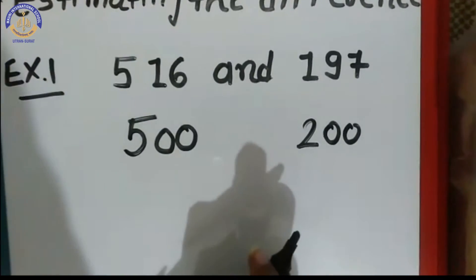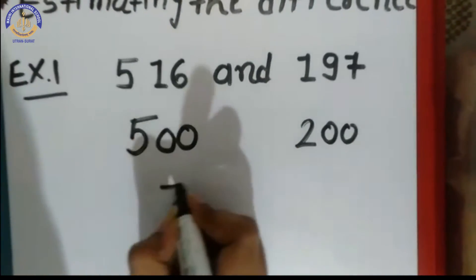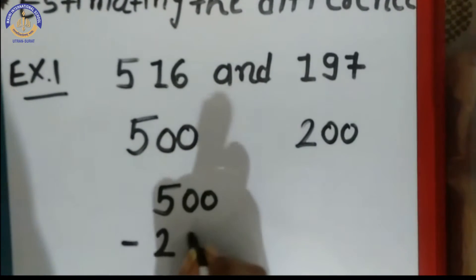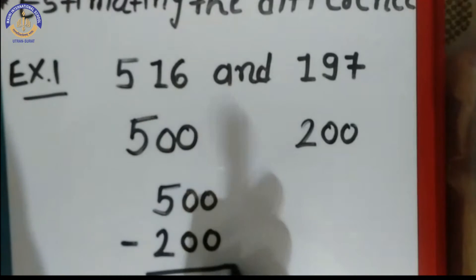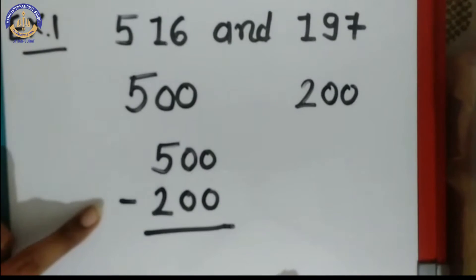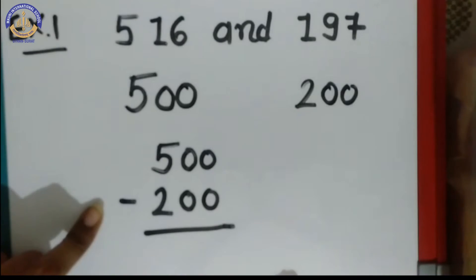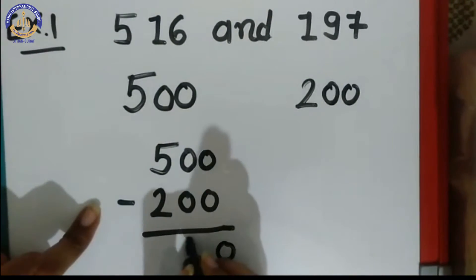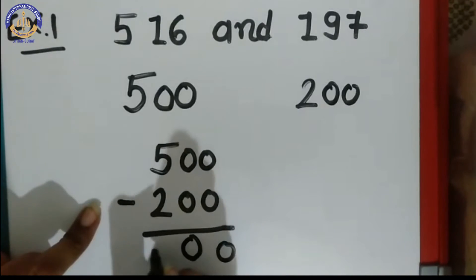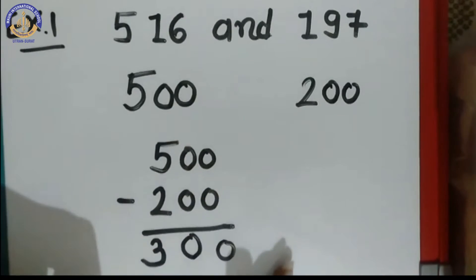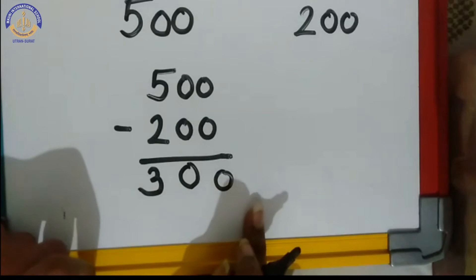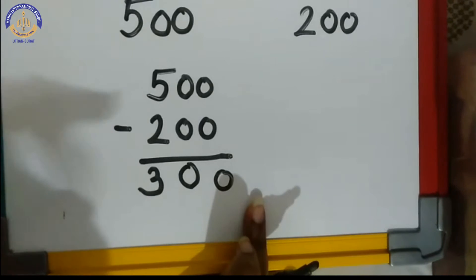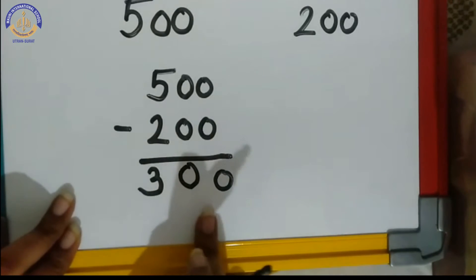Now we find the estimated difference. This is 500 minus 200, because we have to find the difference, so we put a minus sign — that is the symbol for subtraction. Now: 0 minus 0 is 0, 0 minus 0 is 0, 5 minus 2 is 3. So the estimated difference is 300.